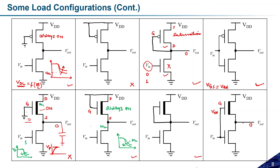Let us check both cases carefully. If Vin equals zero, this driver is in the off state, and since the depletion load is always in the on state, it charges the output toward Vp. So Vout = Vp in this case.